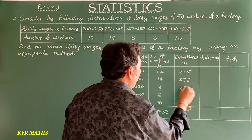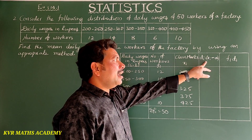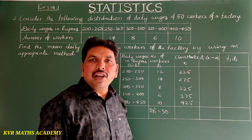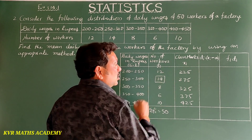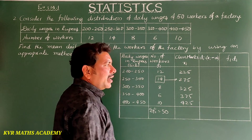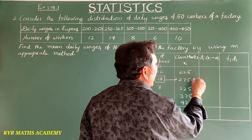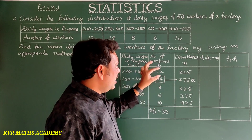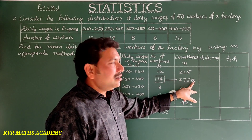Now, di = xi − a, where a is the assumed mean. We choose the assumed mean by looking at the highest frequency. The highest frequency is 14, and its corresponding class mark is 275. So we take a = 275 as the assumed mean.